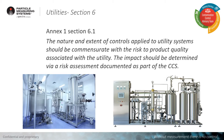In Section 6 regarding utilities, the Annex states the nature and extent of controls applied to the utility systems should be commensurate with the risk to product quality associated with the utility. The impact should be determined via a risk assessment documented as part of the contamination control strategy. Here we're thinking about critical product contact utilities such as purified water, WFI, clean steam, or any other gases that have direct product contact.